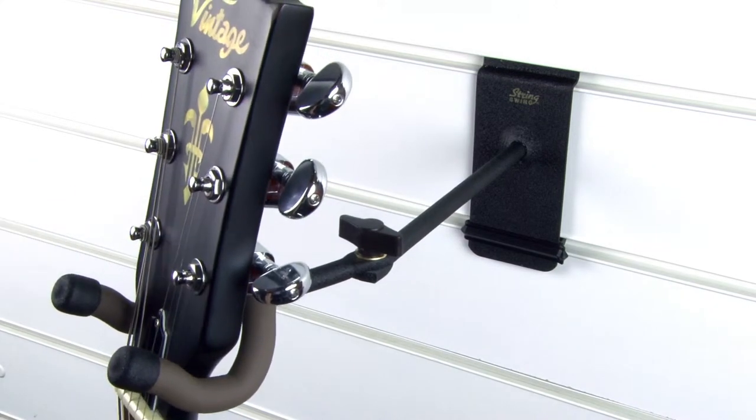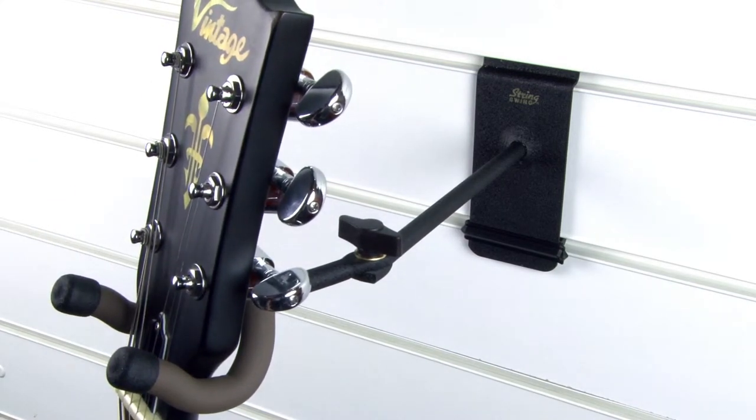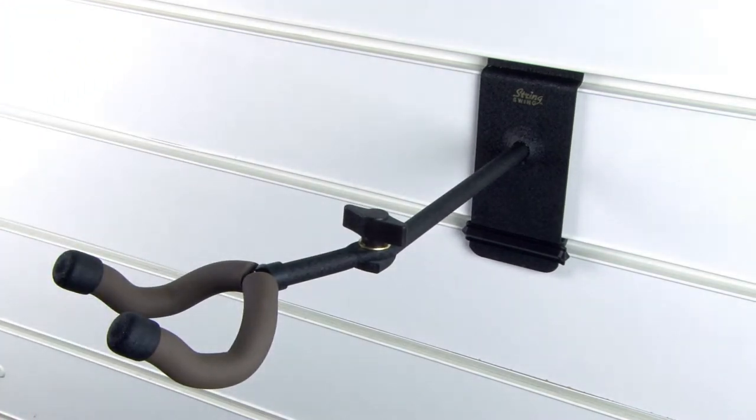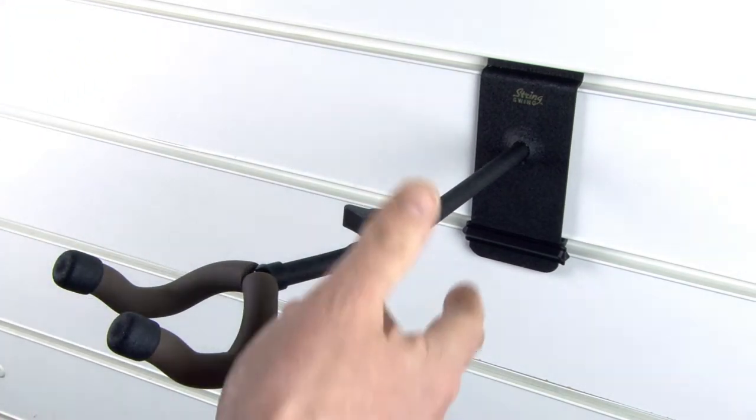This new clip is flexible, allowing you to move and reposition the hanger with ease. All new String Swing hangers come with a plastic clip as standard, and you can also attach it to hangers you already have in your store.